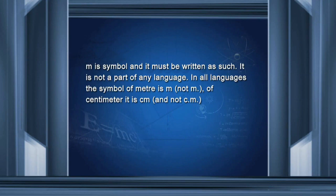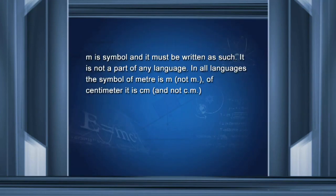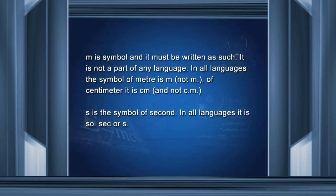I would like to draw attention to the symbols column. 'm' for example is a symbol — it is not part of any language and must be written as such. Distance must be expressed in m. In some places people write meter in their own language, such as in Hindi as 'me', but that is not acceptable for scientific purposes. In all languages, the symbol of meter is m — not 'm.' — and the symbol of centimeter is cm, not 'c.m.'. Similarly, small s is the symbol of second in all languages. 'sec' or 's.' are wrong and are not acceptable.